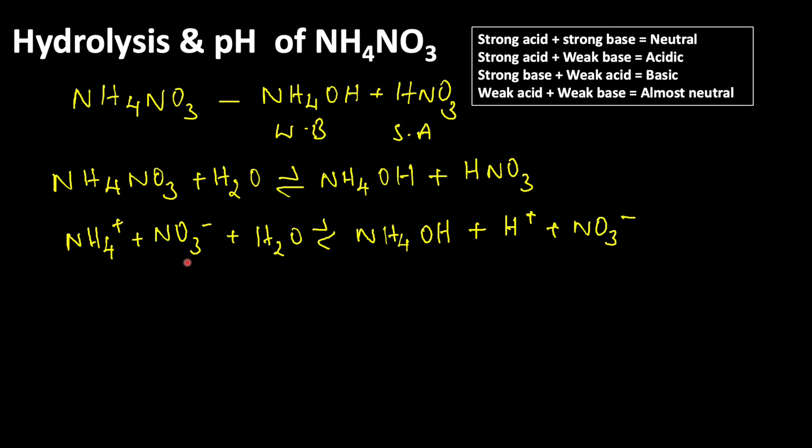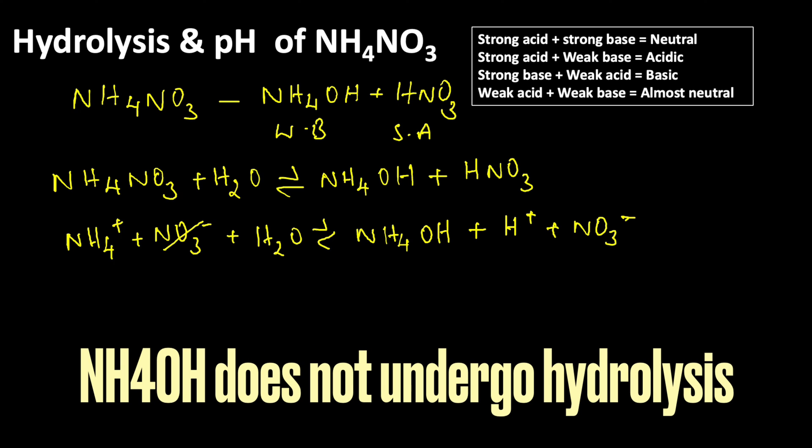The ions present on both sides of the reaction are called spectator ions. If you look at that, NO3- appears on both sides, so we can cancel them out. We can write the remaining ions: NH4+ plus H2O yields NH4OH plus H+.